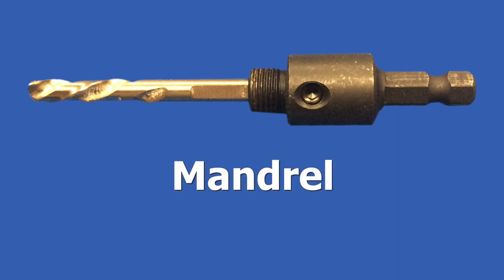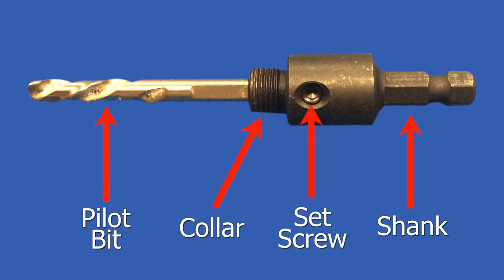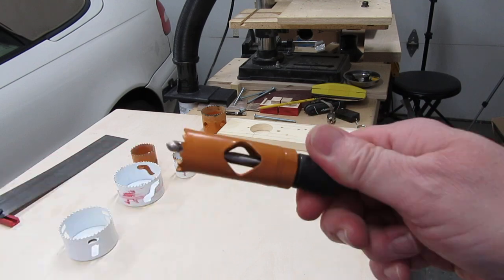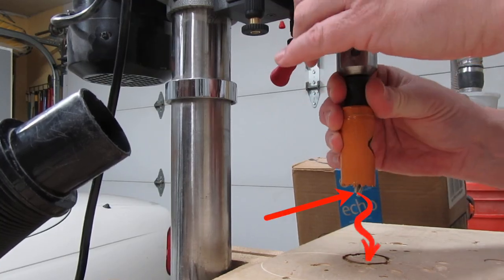You use hole saws with a mandrel, also known as an arbor. Here's one example. This is the shank. This part with the threads on it is called the collar. This is the pilot bit. And this is the set screw for adjusting or removing the pilot bit. The hole saw screws onto the collar, and the shank goes into the drill. The pointy end goes in the wood.